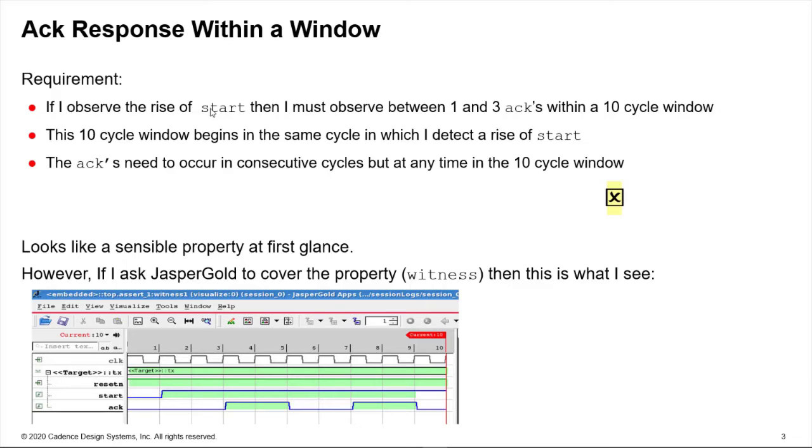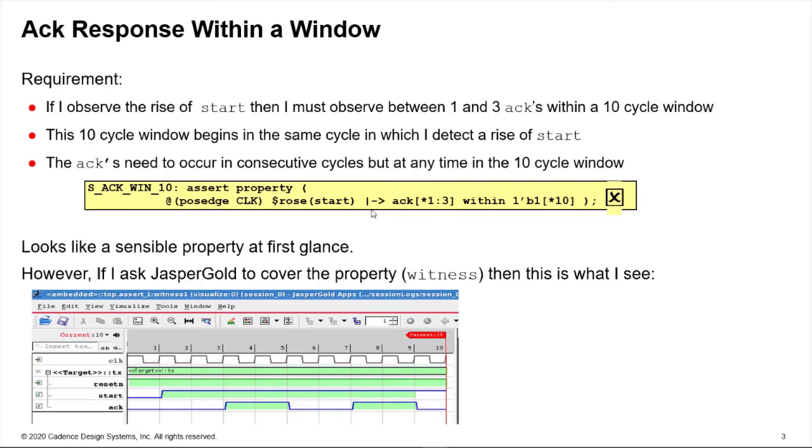So here's a requirement. If I observe the rise of start then I must observe between one and three acks within a 10 cycle window. The 10 cycle window begins in the same cycle as when I observe the rise of start and the acks need to be consecutive cycles but can occur any time within that 10 cycle window. So this looks like a very sensible property to write if we do this.